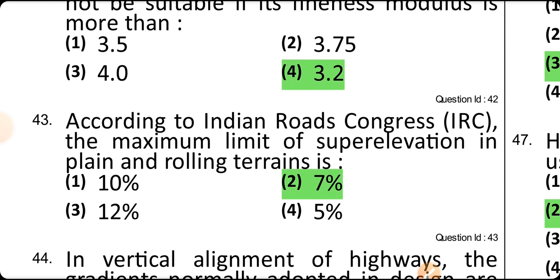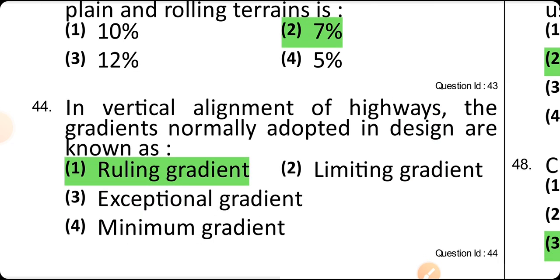According to IRC, the maximum limit of super elevation for plain and rolling terrain is 7%, and for hilly terrain it is 10%. In vertical alignment of a highway, the gradient normally adopted in design is known as the ruling gradient.